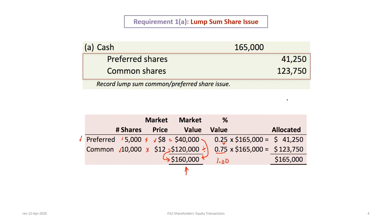We take the $165,000 and allocate it based on the prorated market values. So 25% times $165,000 is $41,250, which gets allocated to the preferred shares, and the remaining 75% is allocated to common shares. There is never any gain, loss, or contributed surplus on the purchase or issuance of shares.